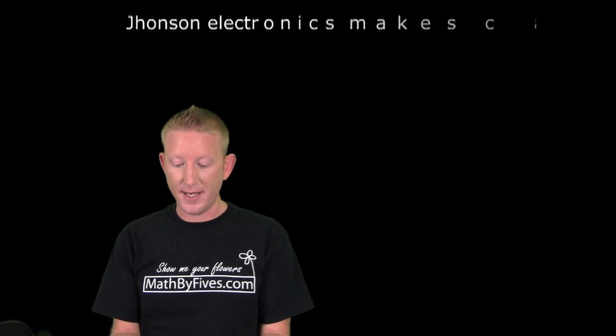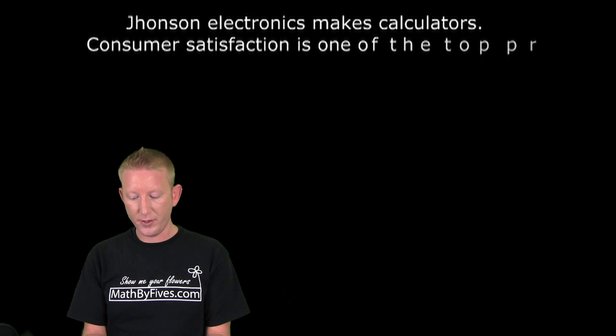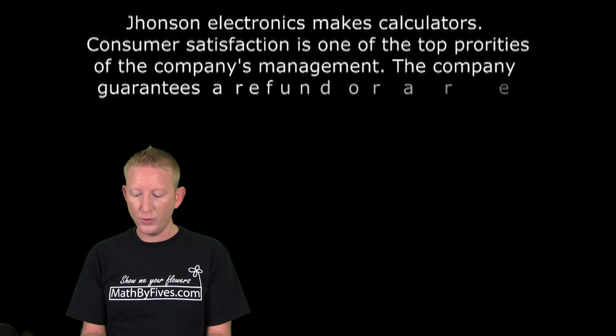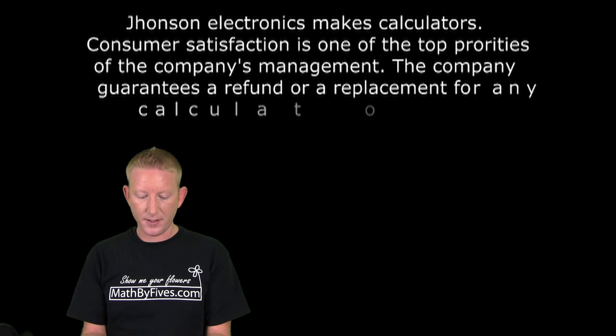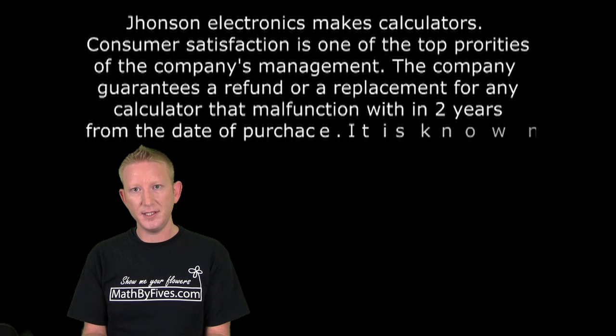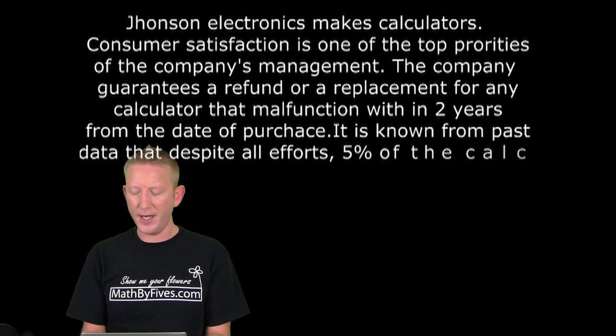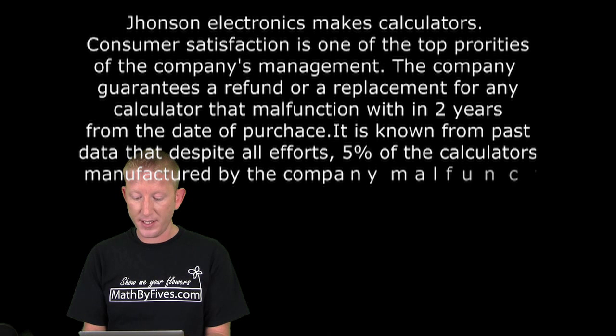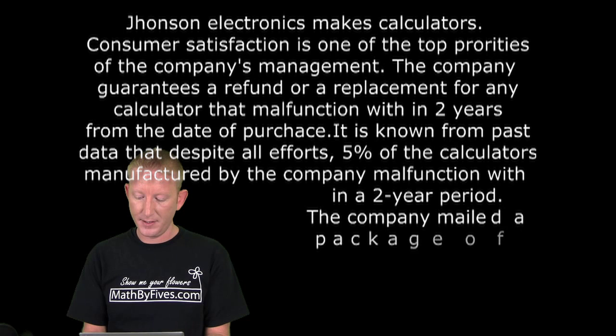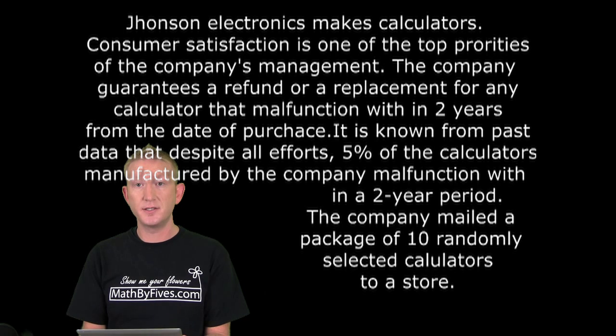Johnson Electronics makes calculators. Consumer satisfaction is one of the top priorities of the company's management. The company guarantees a refund or replacement for any calculator that malfunctions within two years of the date of purchase. Warranty! It is known from past data that despite all efforts, 5% of the calculators manufactured by the company malfunction within a two year period. The company mailed a package of 10 randomly selected calculators to the store.